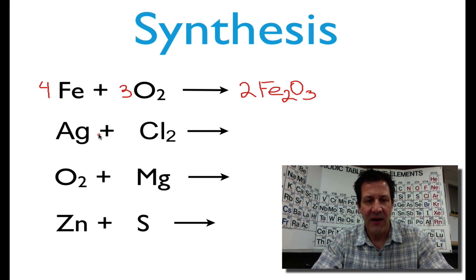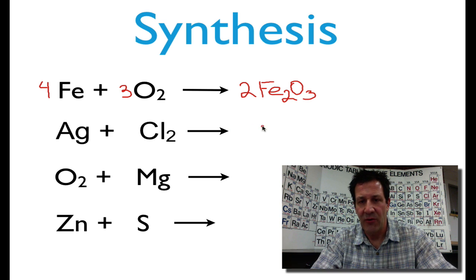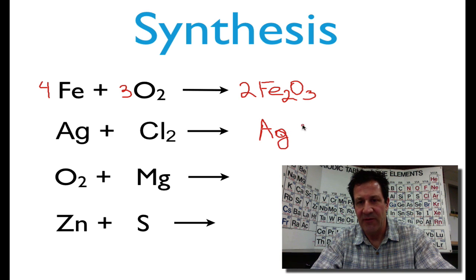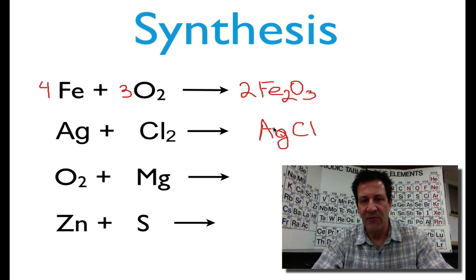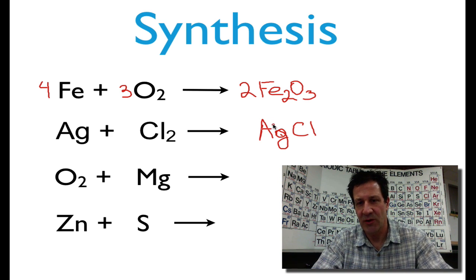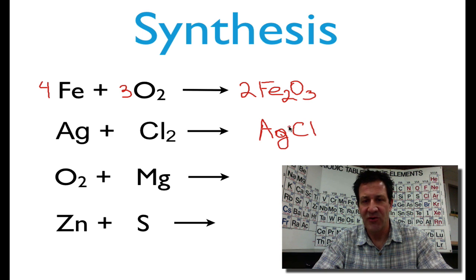Now we have silver metal reacting with chlorine gas, and we know we're going to have a single compound on the right-hand side — silver chloride. Silver forms a plus one charge; it's one of the transition metals with a single charge.